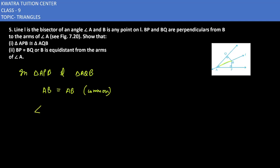The second thing we can write is angle APB is equal to angle AQB, which is 90 degrees. We can prove this by the property of congruency. As it says that L is the bisector of angle A.